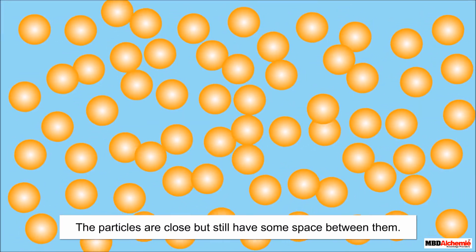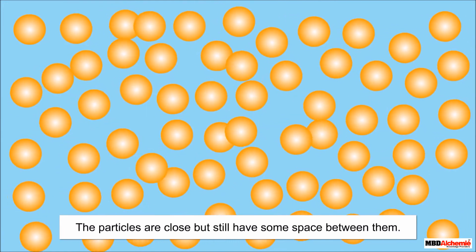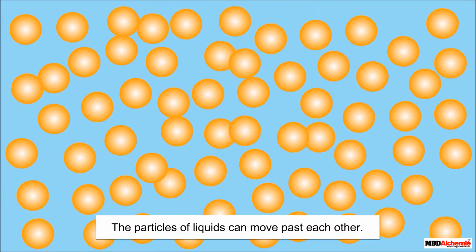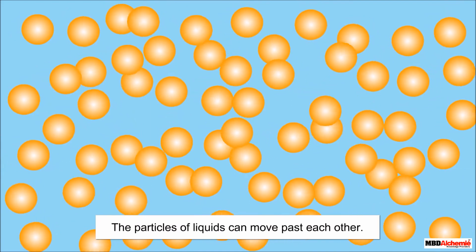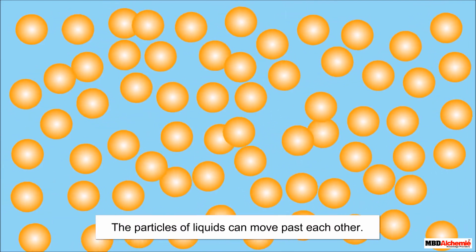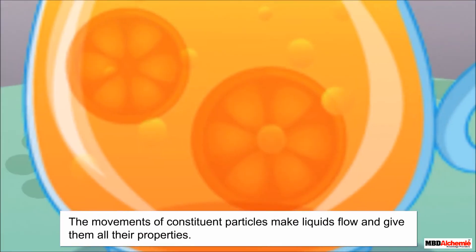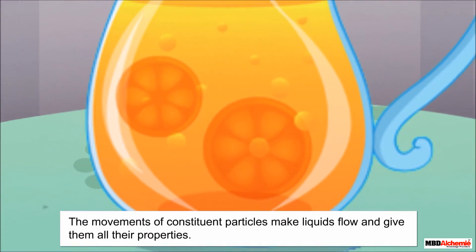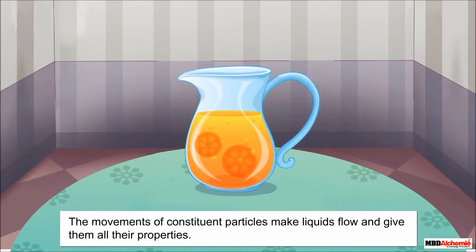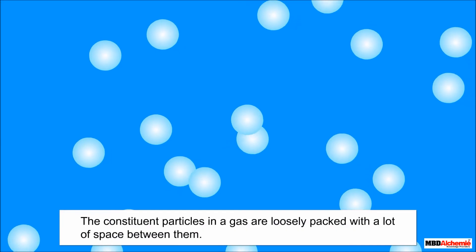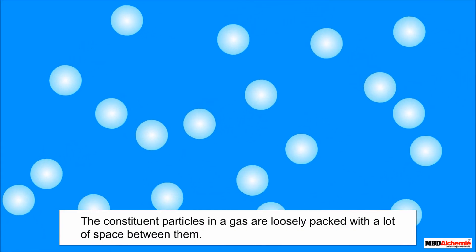In the case of liquids, the constituent particles are not very tightly packed — they are close but still have some space between them. Due to this available space, the particles of liquids can move past each other. It is these slight movements of constituent particles that make liquids flow and give them all their properties.